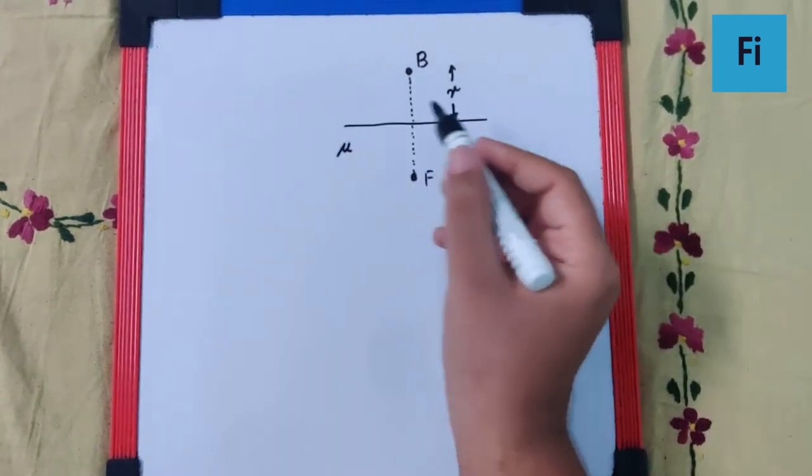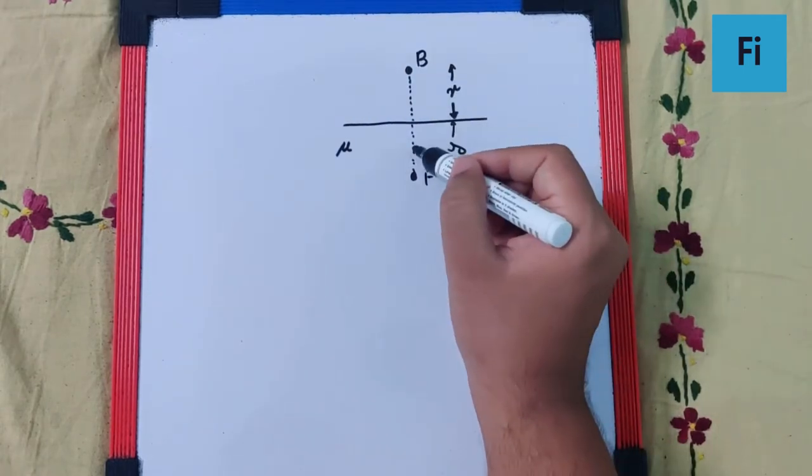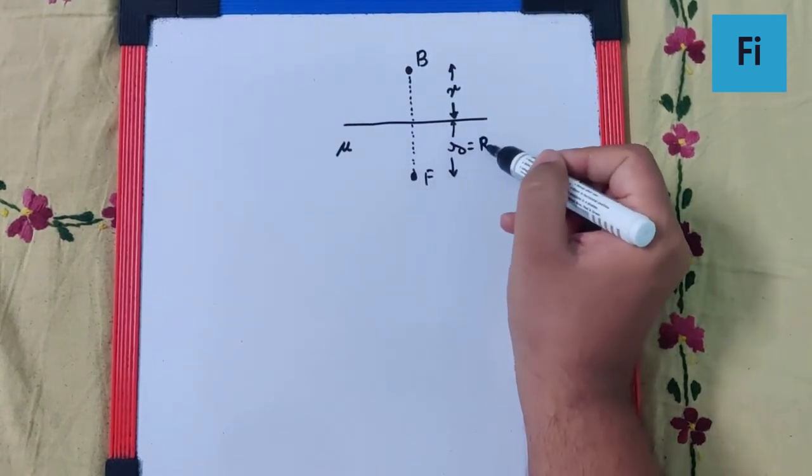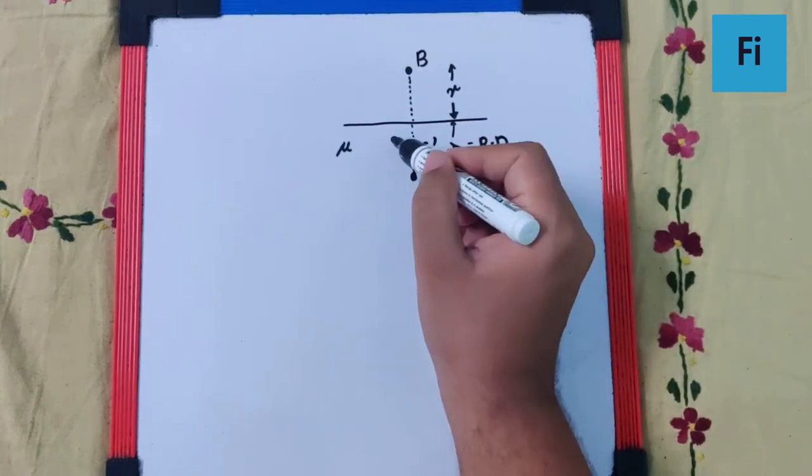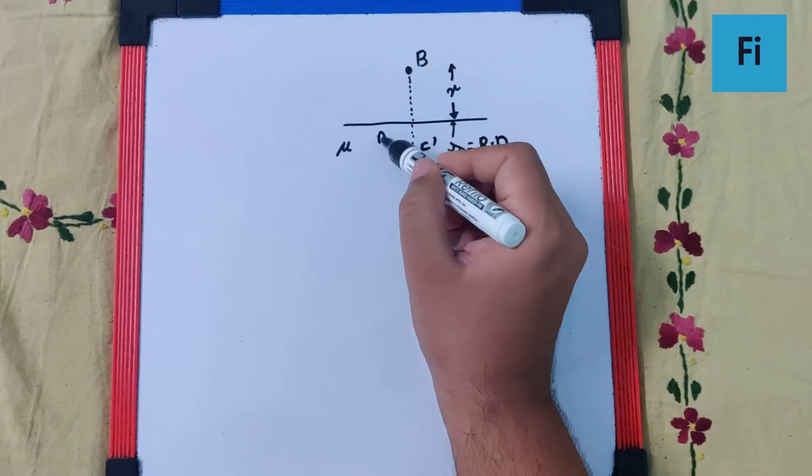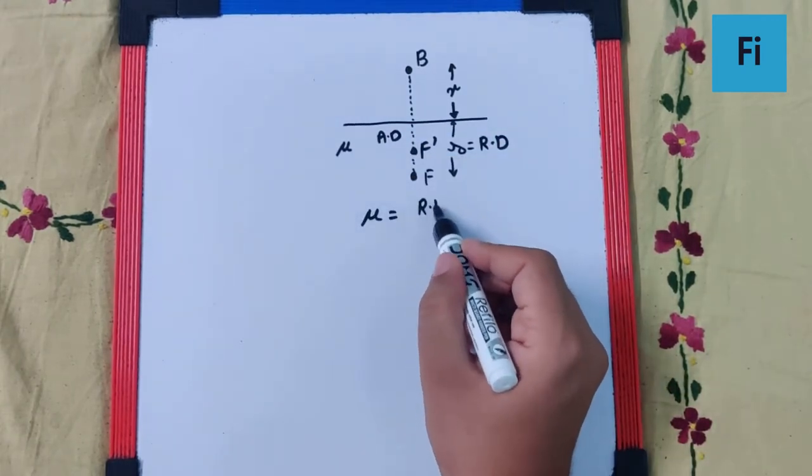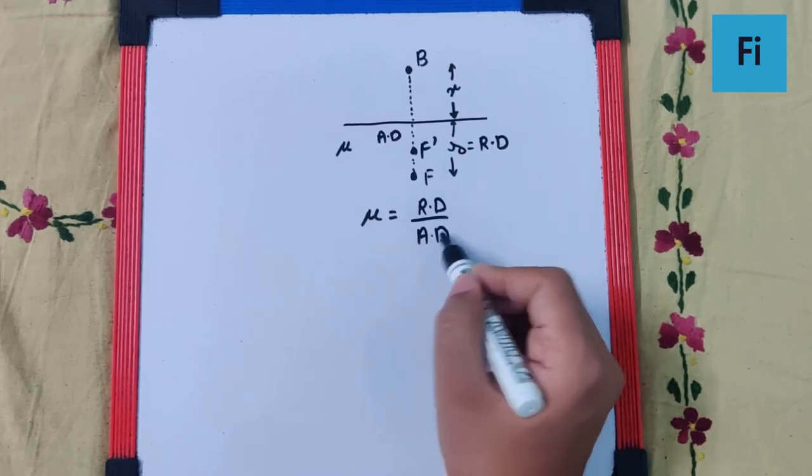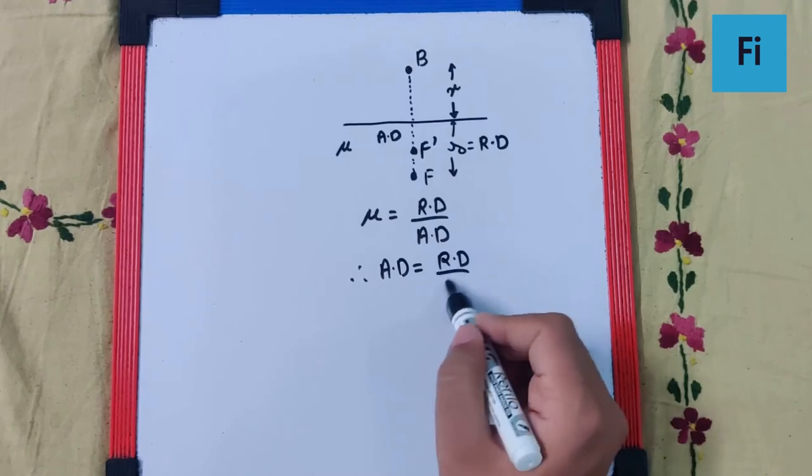So definitely if bird is the observer and fish is the object, this is the real depth. We need to find the apparent depth using the formula: mu equals real depth upon apparent depth. So apparent depth will be real depth upon mu.